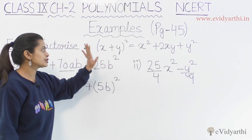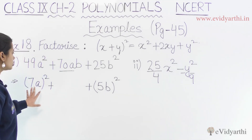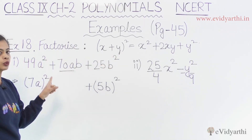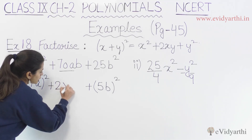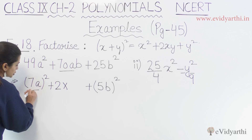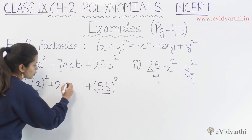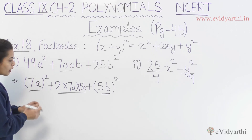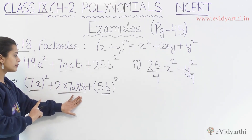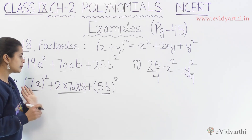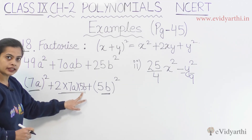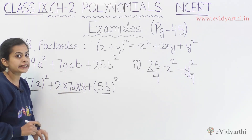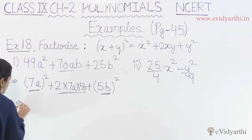Now if we have a² and b², and we have a plus b whole square or x plus y whole square, the first and last positions are perfect squares, and the middle term will be 2 multiplied by both terms. So my first term is 7a and next term is 5b. Their product 7a × 5b multiplied by 2 gives us 70ab. So we verify that the middle term is 70ab — the question matches.